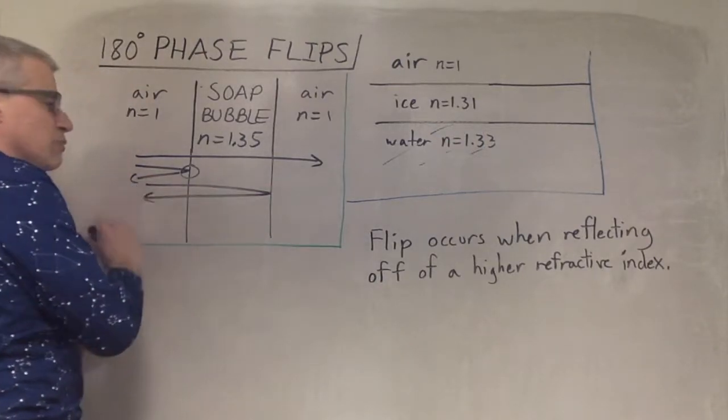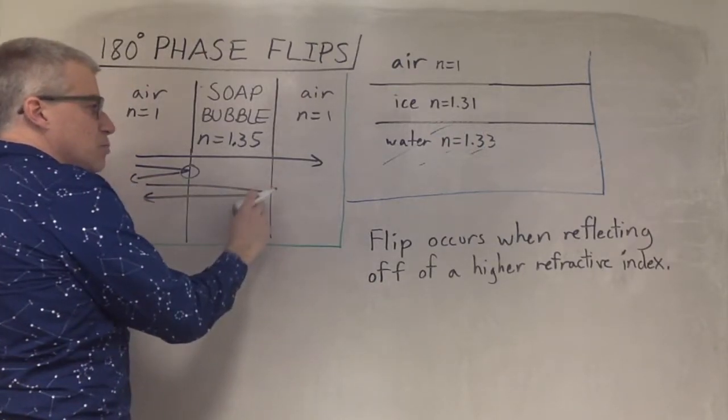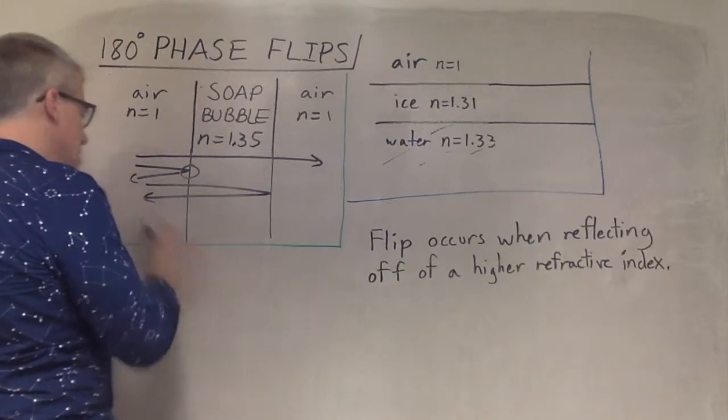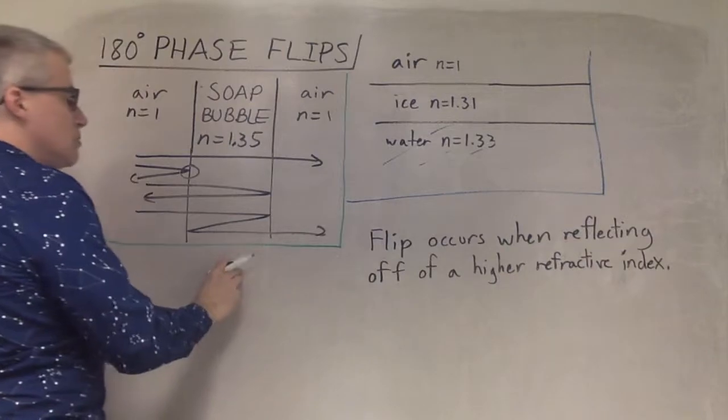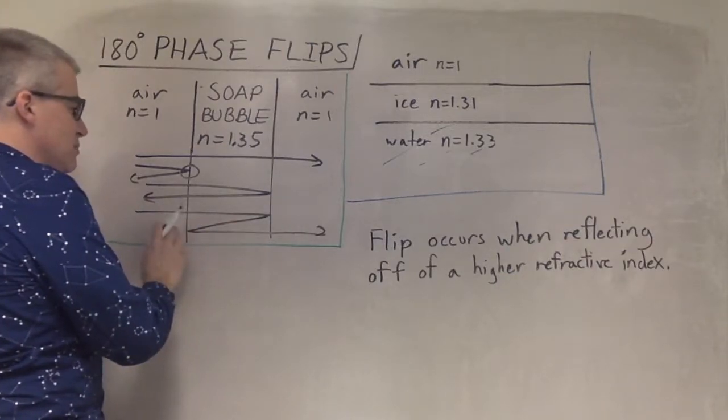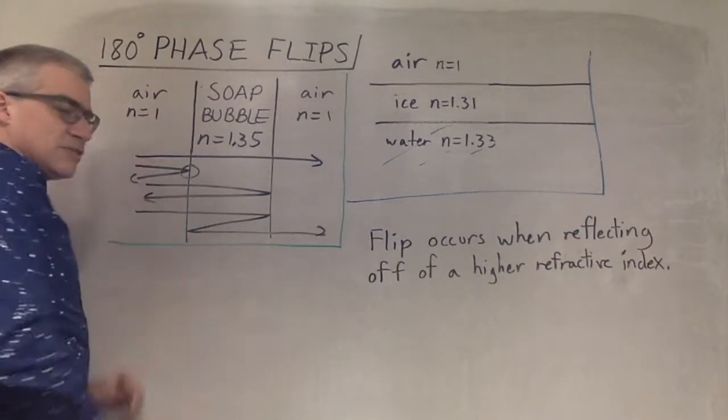Here it could reflect, but it would not have a phase flip. And here we could bounce, bounce, reflecting off of lower, reflecting off of lower. The only phase flip is there.